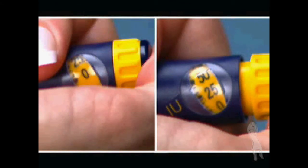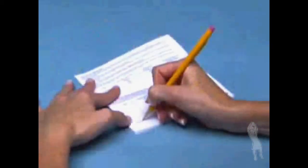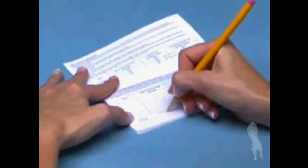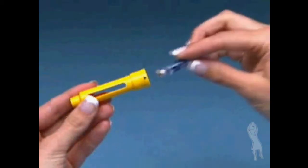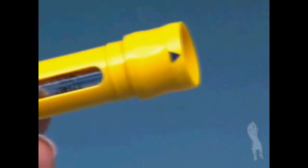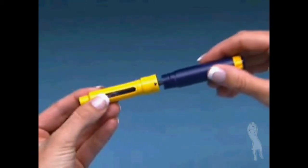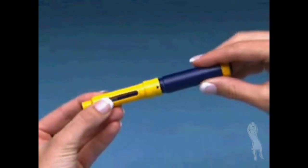The number in the dosage window will give you the amount of medication needed to complete your dose. Write this number down. This will be the number of units you will need for the completion of your dose. Start over with a new Follistim AQ cartridge and a new needle and follow all the instructions up to this step. Make sure you choose a different injection site to complete your dose.